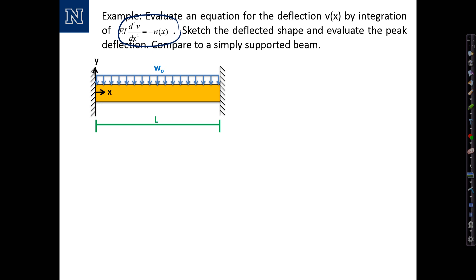The load equation here is relatively simple. It's a uniform load, so we can write W(x) equals W-naught. The fourth-order equation needs four boundary conditions. We have a fixed support at the left end and a fixed support at the right end. At both fixed supports, the effect is to restrain both the deflection and the rotation. So those are our boundary conditions.